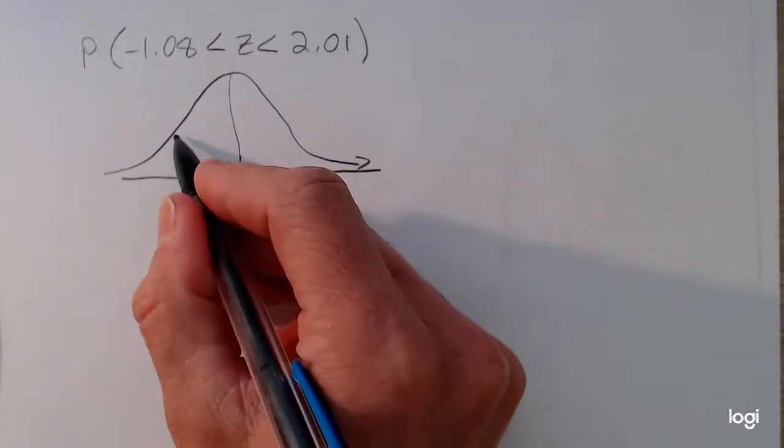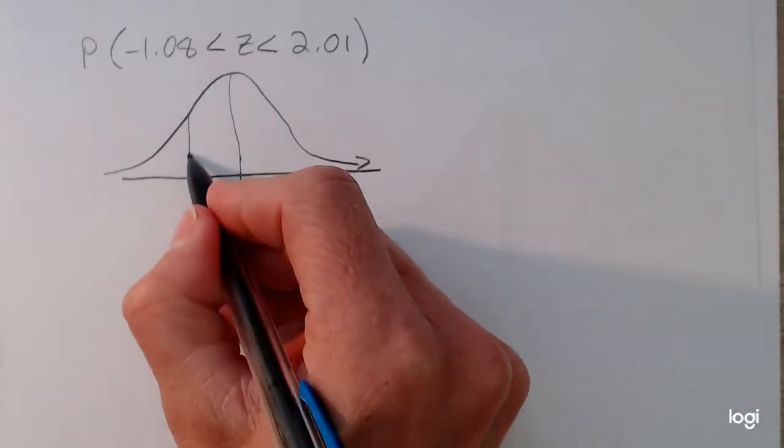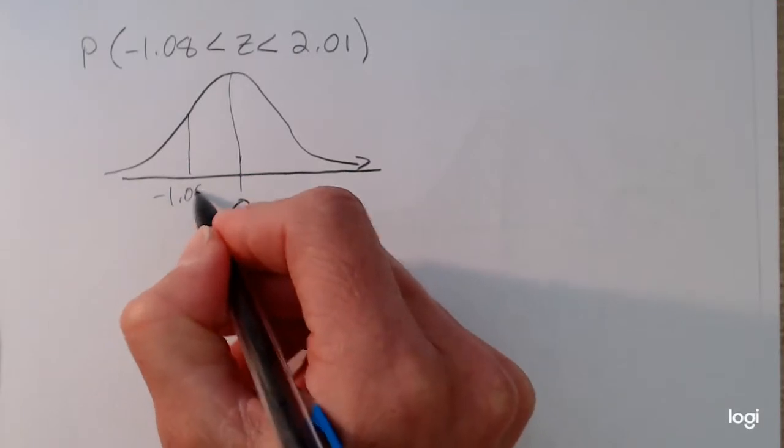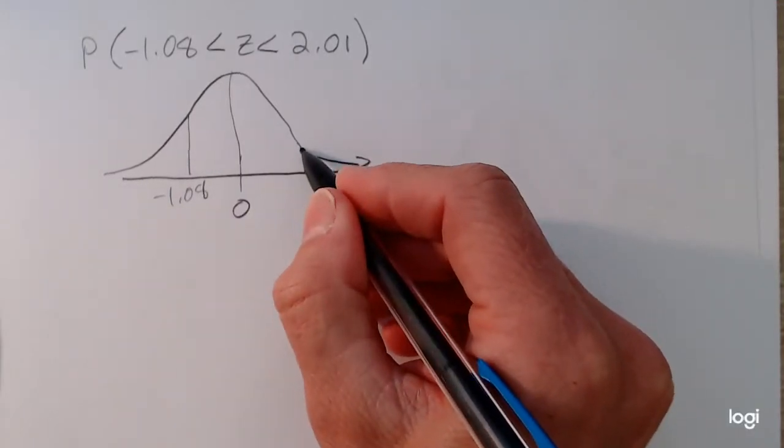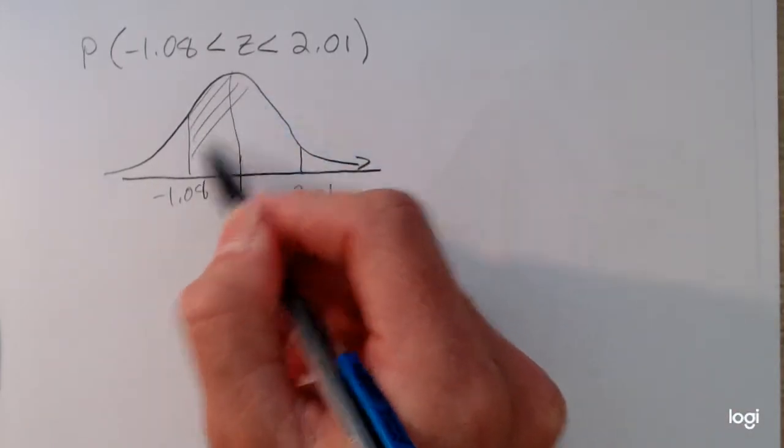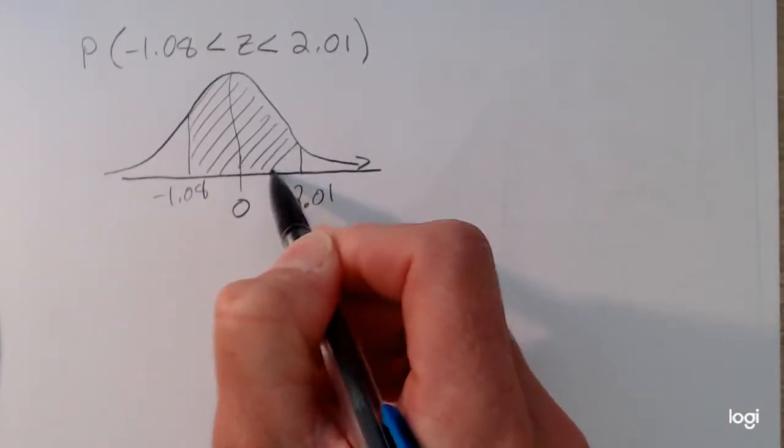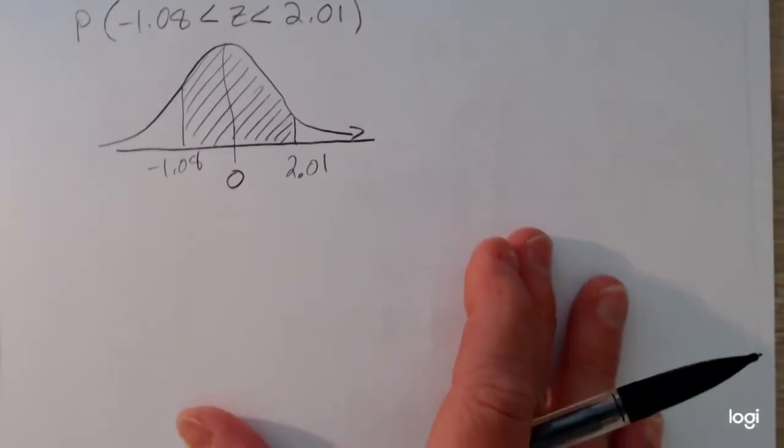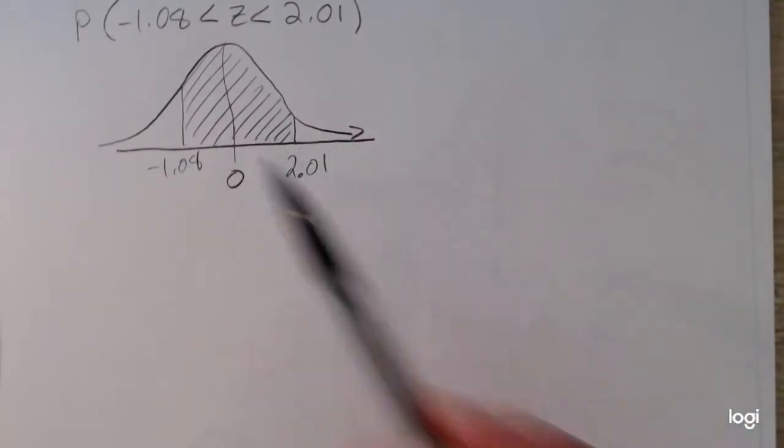And I'm starting at negative 1.08 and I'm stopping at positive 2.01. So I don't have two symmetric areas about, symmetric about zero. All right, so I'm shading an in-between case here.